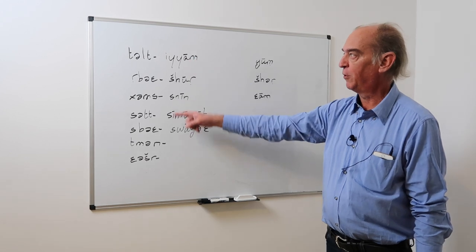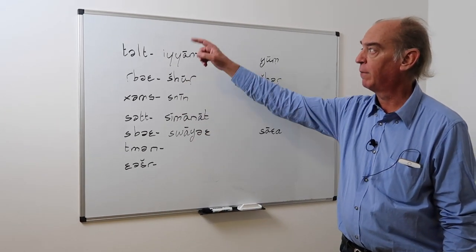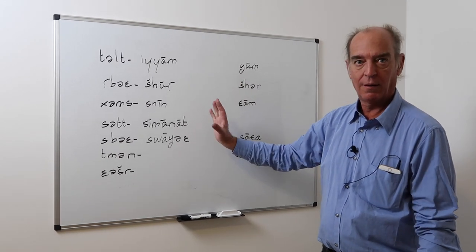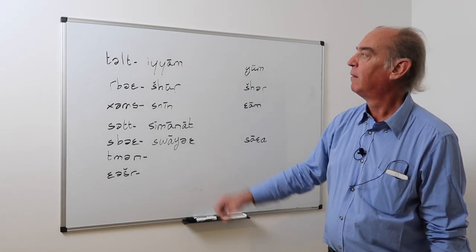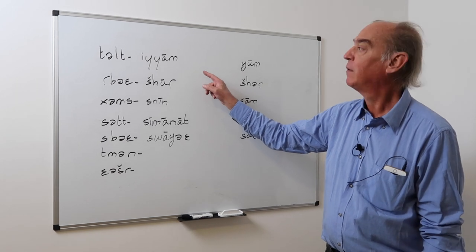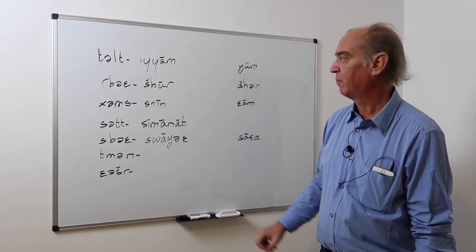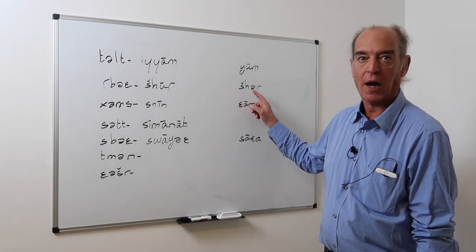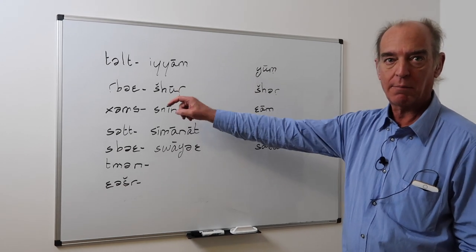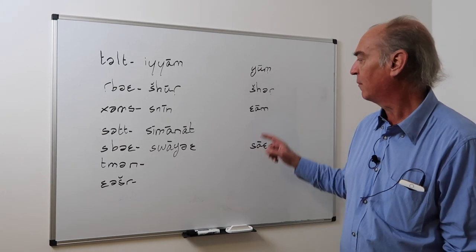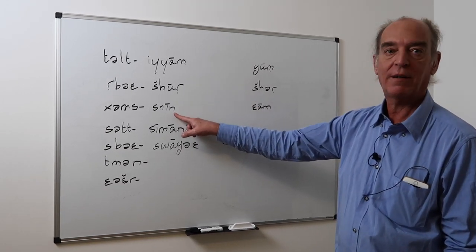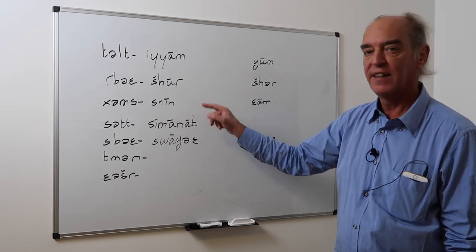Now we have to introduce short forms of the numerals, the numbers from three to ten, which are used only with some very few words, which don't use the particle d. For example, yawm, day, plural is a'ayam. You say c'ti-yam, three days. We also have shhar, a month. Its plural is shhor. Arba' shhor, four months. A'am is a year, and it has a very strange plural, s'nin. Khamsnin, five years.